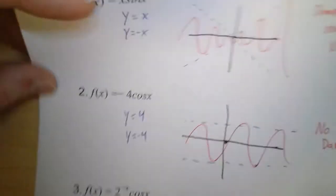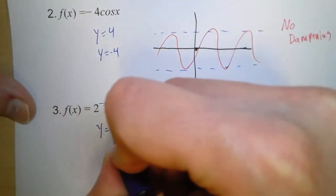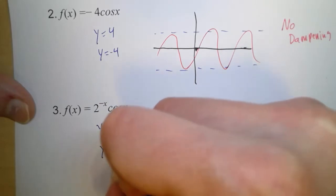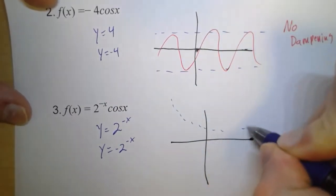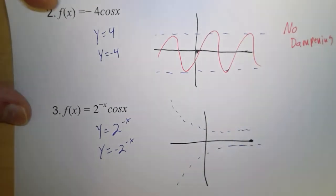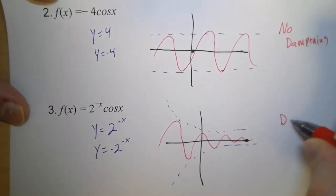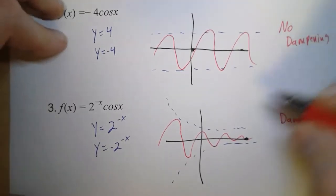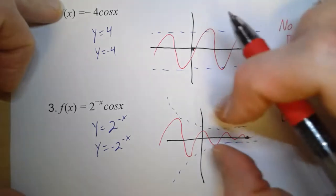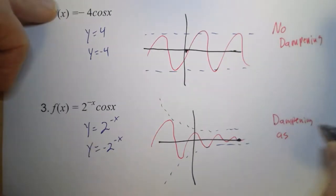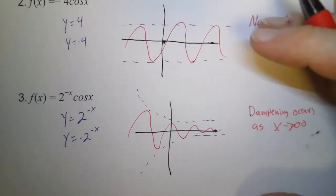Now, for this third one, we have 2 to the negative x cosine of x. So our boundaries, those are going to be y equals 2 to the negative x and negative 2 to the negative x. Now, we've got to be careful with that negative. 2 to the x would go up like this, but 2 to the negative x comes down like that. And so negative 2 to the negative x does that. And so our graph is going to be shaped like that. So our dampening, yeah, it does occur because our amplitude is getting smaller. But as you continue to go off to the right, they get closer and closer. So the dampening occurs as x approaches infinity. That's where the dampening is occurring for this graph.